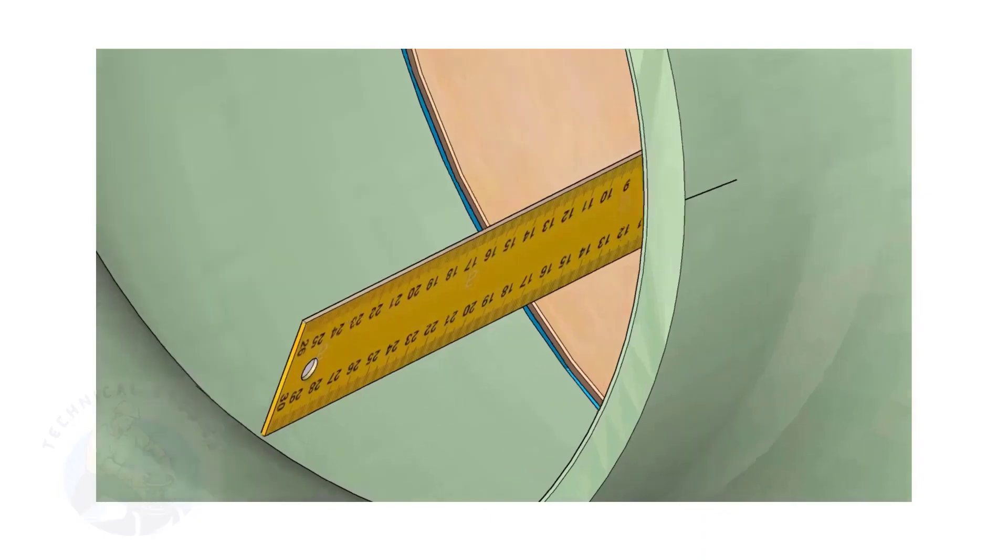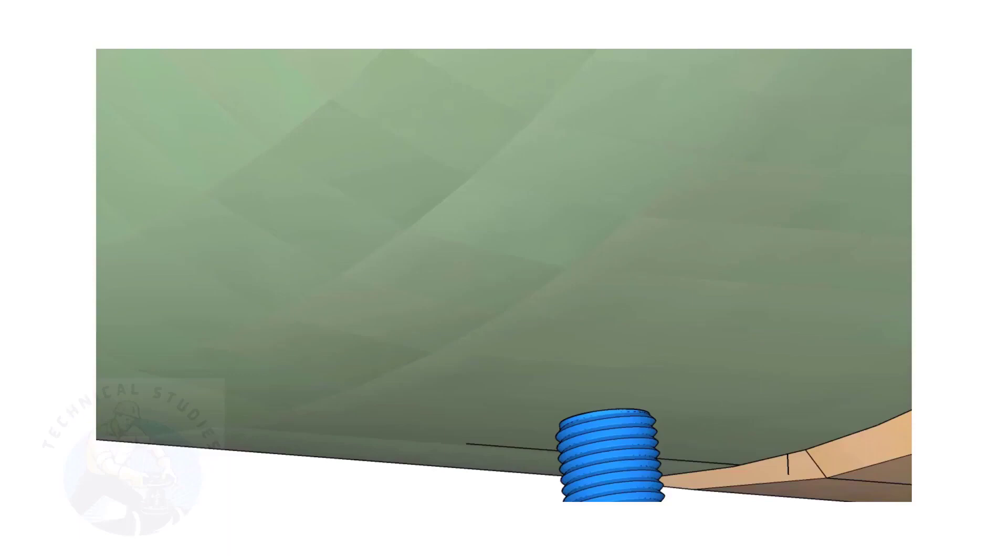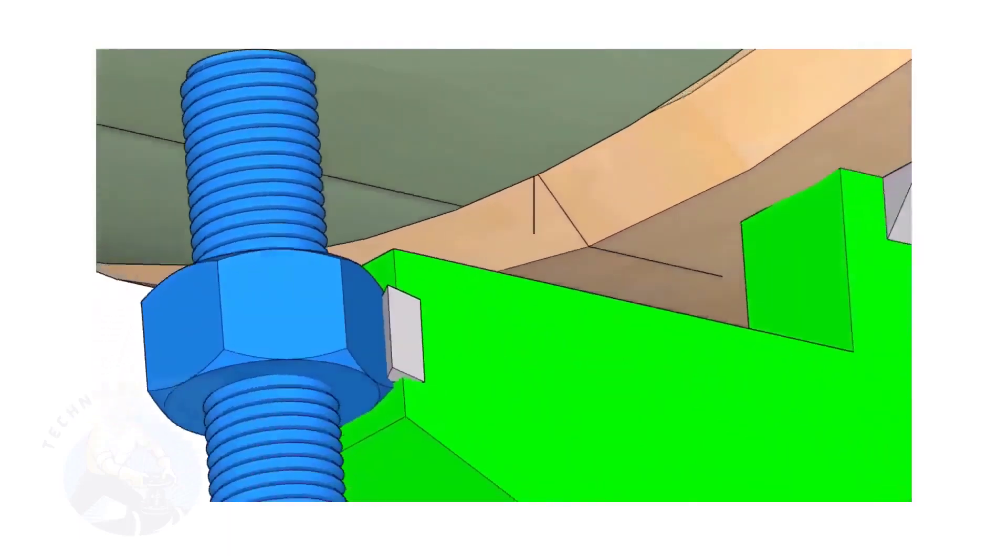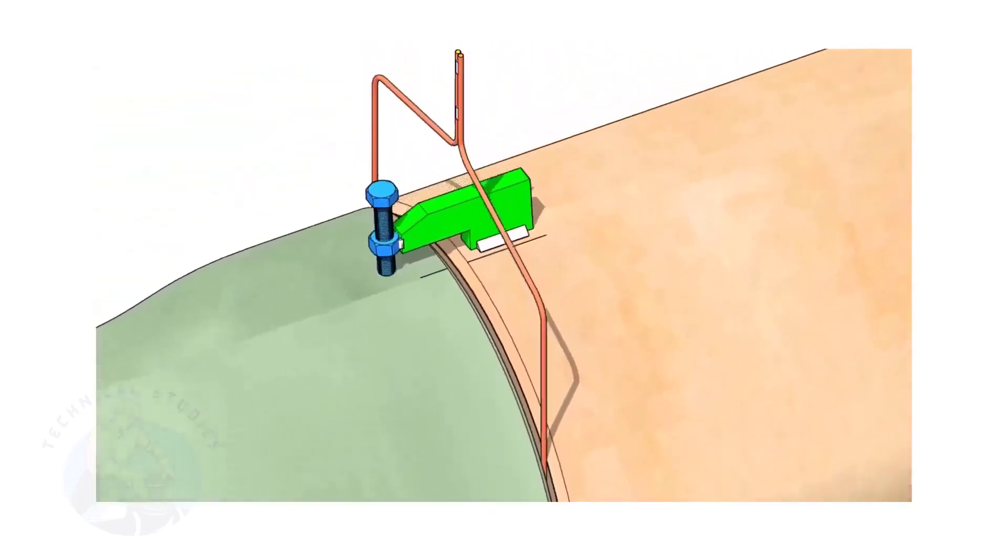By adjusting the jack bolts, correct the overlap of the joint inside the pipe. Now, tack weld on the top side of the joint.